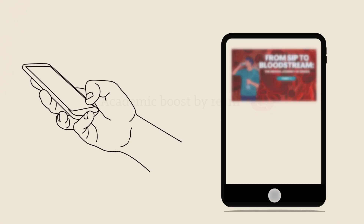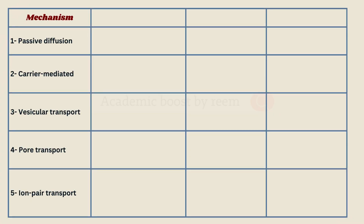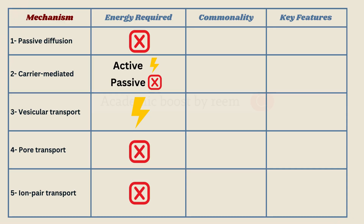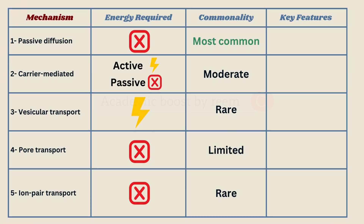Let's summarize what we learned in parts one and two. Drawing a table of our five discussed mechanisms, we'll compare them based on energy requirements, commonality, and key features. Passive diffusion needs no energy. Carrier-mediated transport requires energy if active, but not if facilitated. Vesicular transport does need energy, while pore transport and ion-pair transport do not. Passive diffusion is the most common mechanism, followed by carrier transport at moderate frequency, vesicular and ion-pair transport being rare, and pore transport being limited.